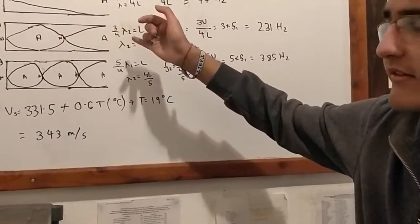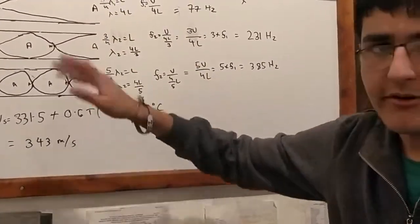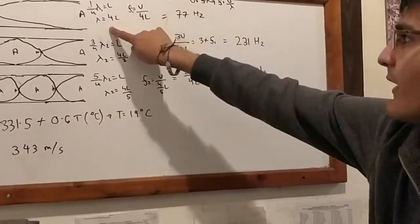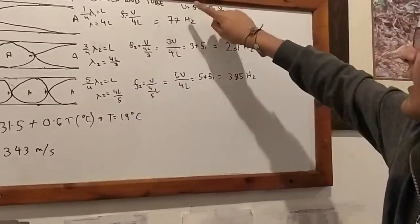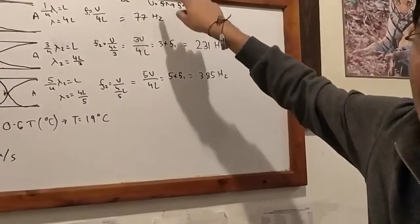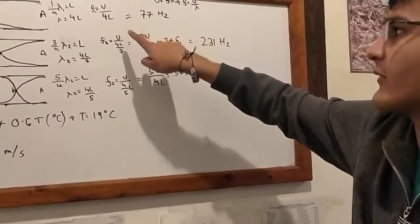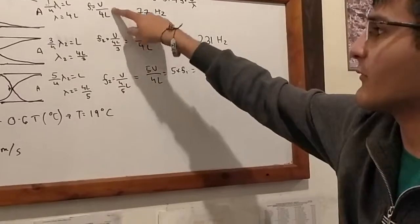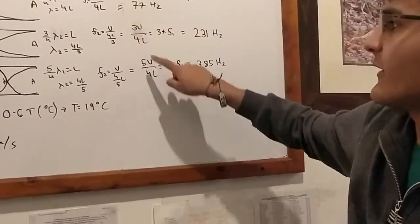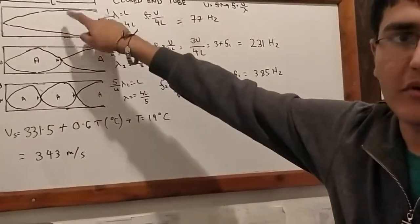Similarly, in the second harmonic you get three-fourths of a wavelength equals L, and five-fourths of a wavelength equals L for the third one. If you put these values of L for lambda into the F equals V over lambda formula, derived from V equals frequency times lambda, you will get V over 4L, 3V over 4L, and 5V over 4L for these corresponding harmonics.